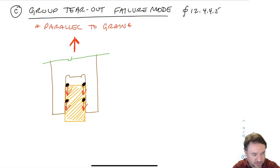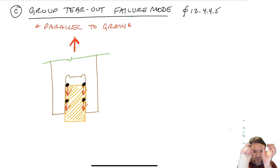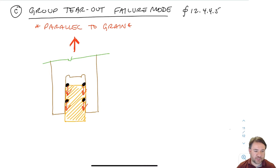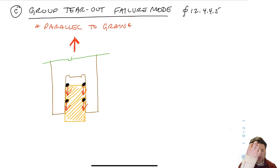So it looks something like this: instead of pulling out two plugs, which is what row shear does, I pull out basically a big chunk of wood material from the center. You have to imagine that for these failure modes to exist, all the bolts have to move together — all four bolts at the same time — and they have to pull out a chunk of wood with them.